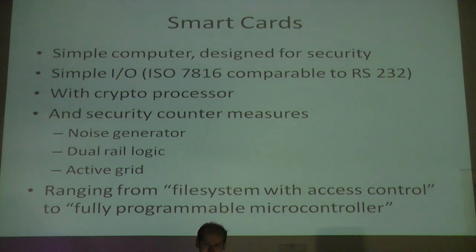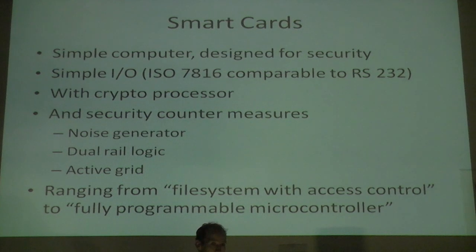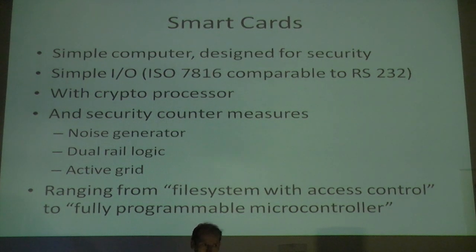The other thing that's special about smart cards, making them more secure than normal computers, is that there are intentional mechanisms for trying to secure whatever is stored in them — credentials, keys. There are active countermeasures for known attacks: noise generation, dual rail logic, an active grid that detects whether someone is trying to open the chip and will actively try to erase memory at that point. From all sorts of different layers, security mechanisms work in smart cards as soon as you power them on.